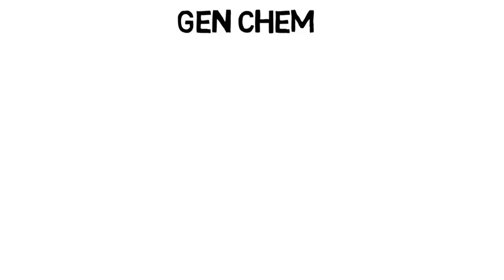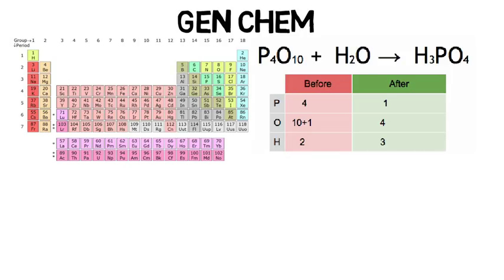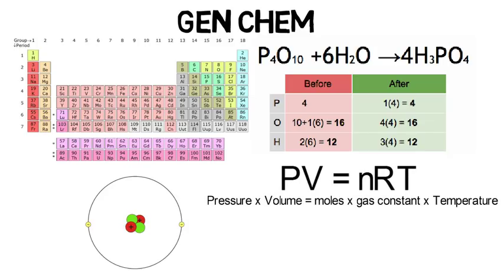Gen chem comes first and is where you'll learn the basics but will go into more depth than you might have learned in high school chemistry. You'll learn the periodic table, how to mathematically balance chemical equations, the evolution of how the atom was understood, the ideal gas law, and more.